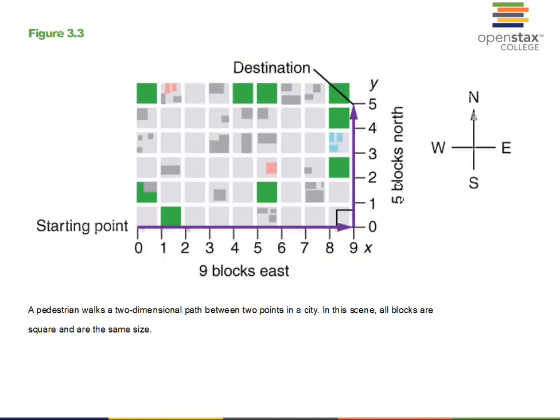So here's a layout. We start over here on the bottom left. We go nine blocks to the east. We go five blocks to the north. So did the person have a displacement of 14 blocks? The answer is no. The displacement is straight line distance, the helicopter path from beginning to end. And that will be a certain number at a certain angle.